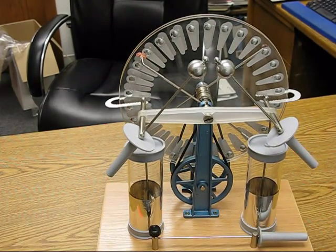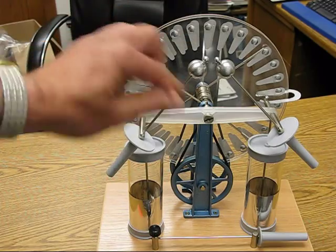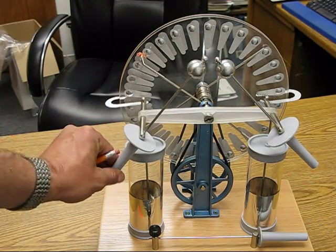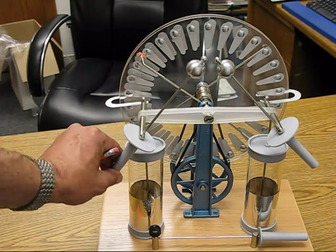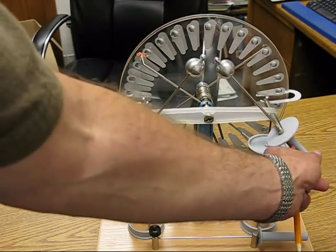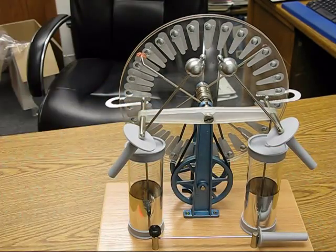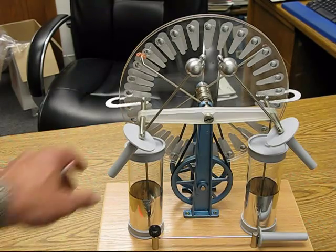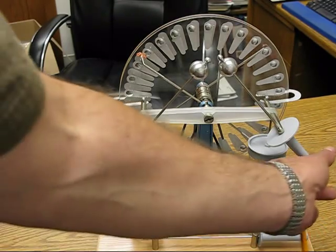Here you'll see a better view of the spark gap. There are two balls here, and you can adjust the gap by moving the rods. The farther away the balls are, the longer the spark is. The closer together, the shorter the spark.